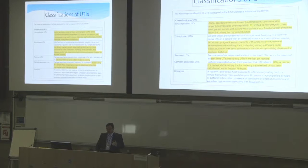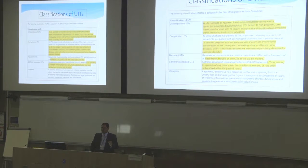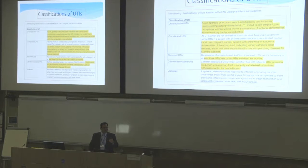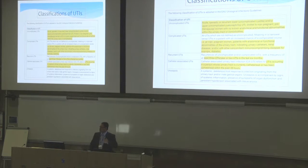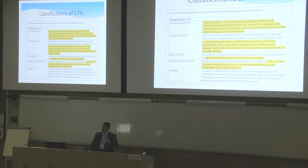Recurrent infections are defined as two or more proven infections in six months, or three or more proven infections in a year. Catheter-associated infection applies to anyone catheterized or who has had a catheter for more than 48 hours. Urosepsis is when any infection causes systemic illness — temperature, high inflammatory markers. There are new sepsis guidelines which have been released recently.